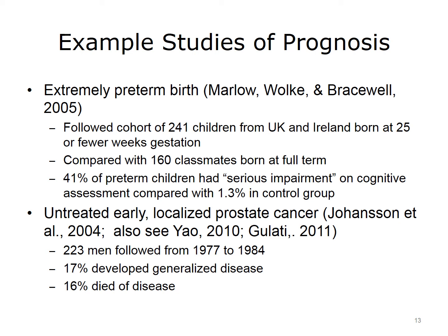Another study of prognosis was published on untreated early localized prostate cancer. This study focused on a group of men who were diagnosed between 1977 and 1984 and had regular long-term follow-up. Today, many of those men would have had surgery, but this study gives us an indication of the natural history of the disease. About 17% of these men developed generalized disease — in other words, the cancer spread or metastasized to other areas — and 16% of the men died of the disease. This is another demonstration that many men who develop prostate cancer do not die from it, and it does not even spread outside their prostate.